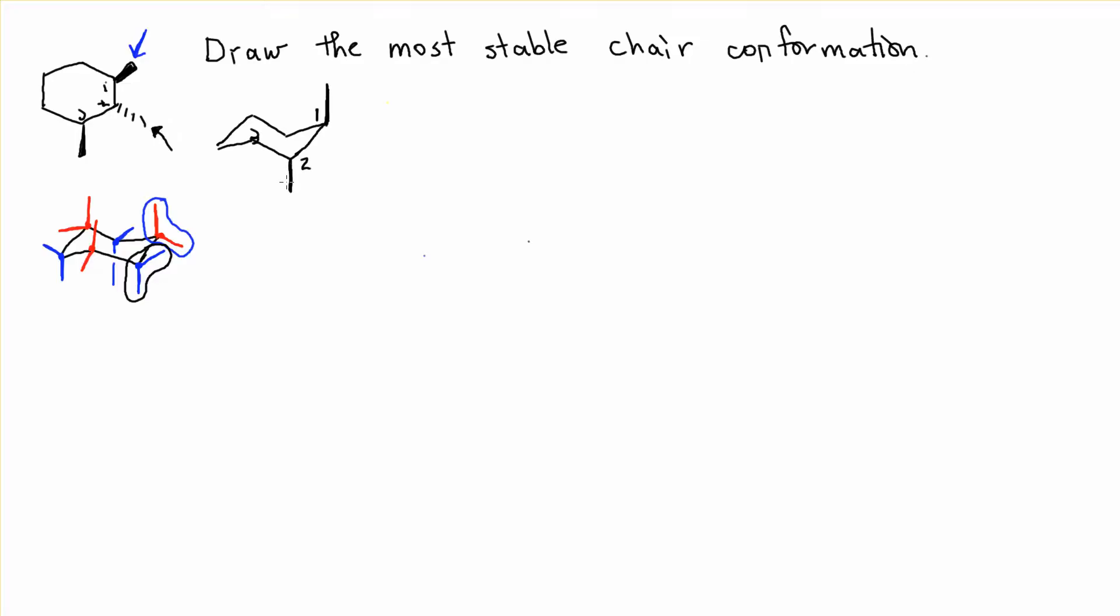Right now, the methyl group at carbon number 1 is axial. The methyl group at carbon number 2 is also axial. At carbon number 3, the up group is also axial. So that's what our chair conformation looks like. The problem is, this is not the most stable.